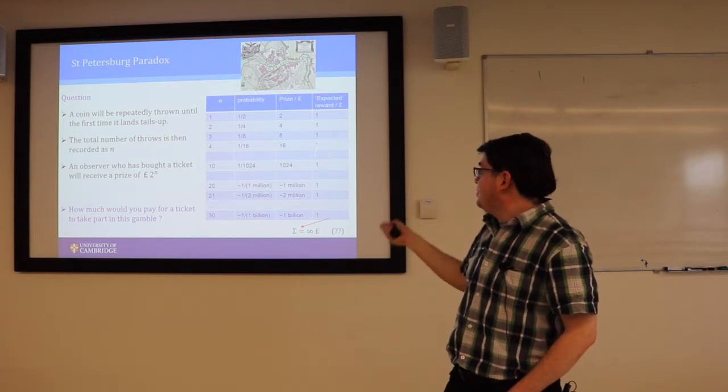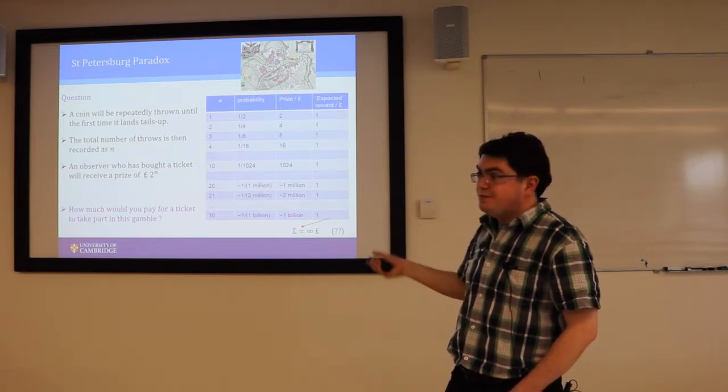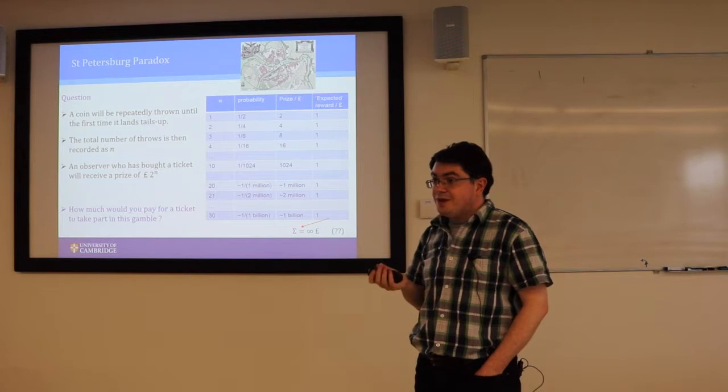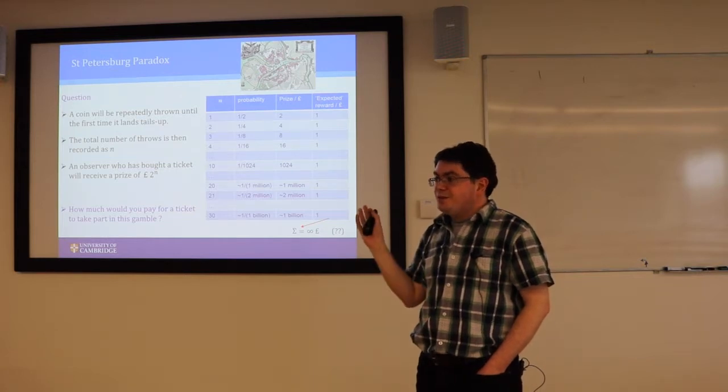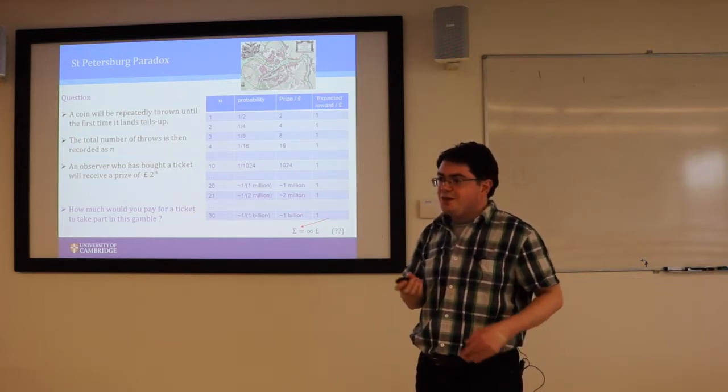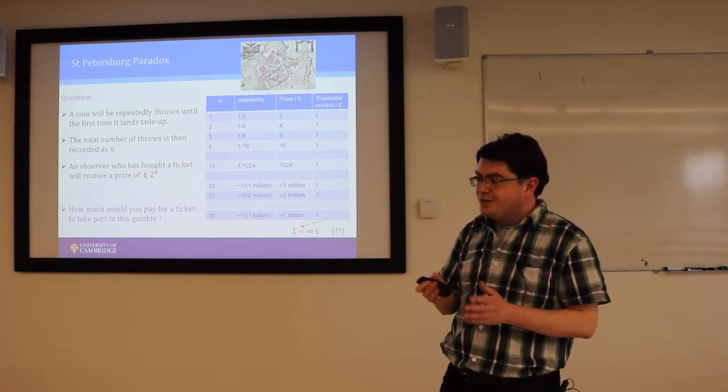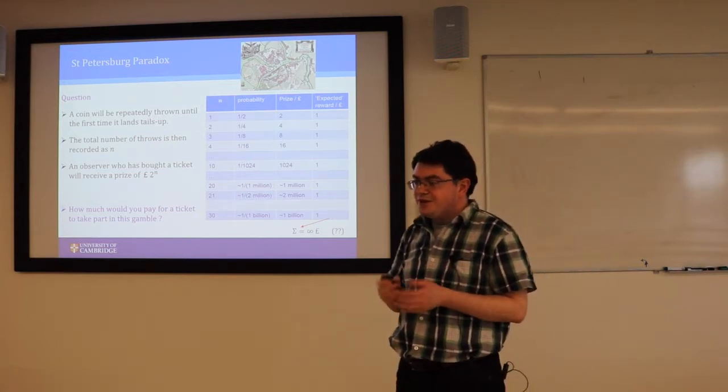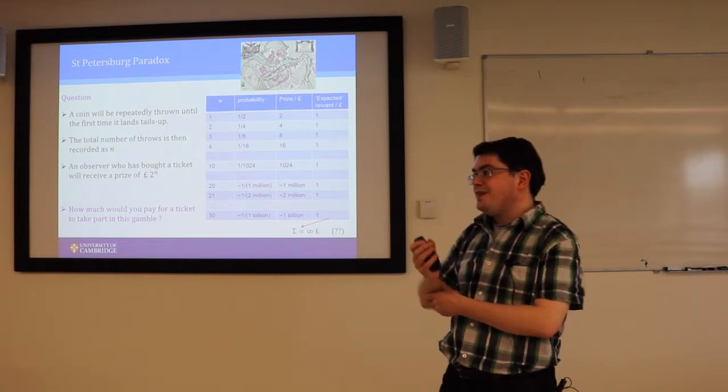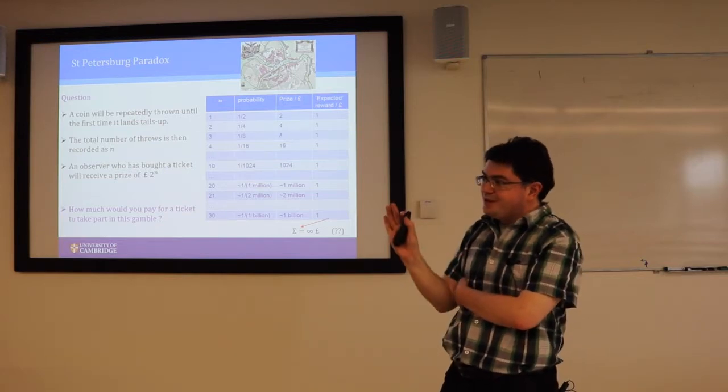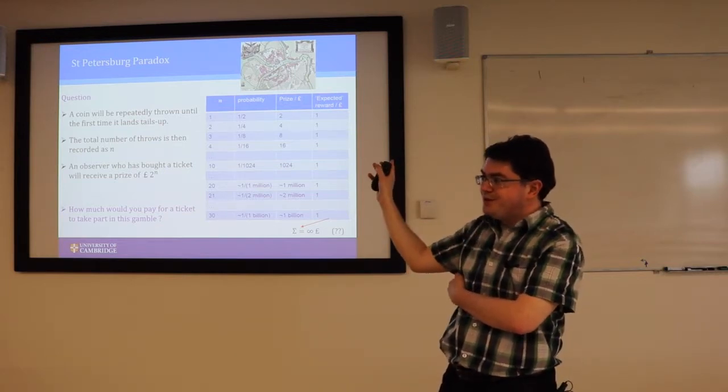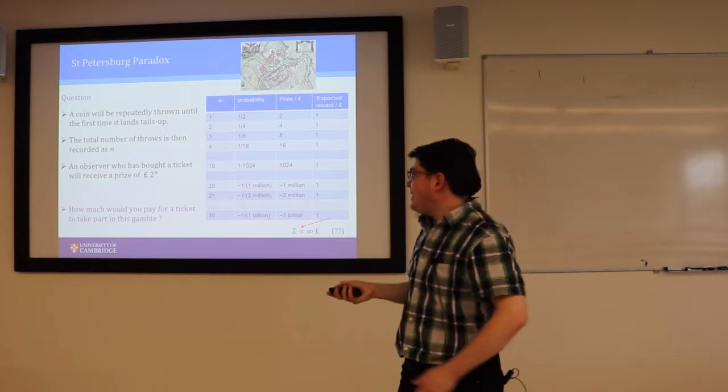So the expected reward is this, if you define that as long-run average. But this is a problem, because we have to explain why would all sensible people, including, say, me, definitely not offer more than, say, 20 quid for this ticket. And that's the answer, Jethro. I'd go up to 21 quid, and I'll show you why. Okay.